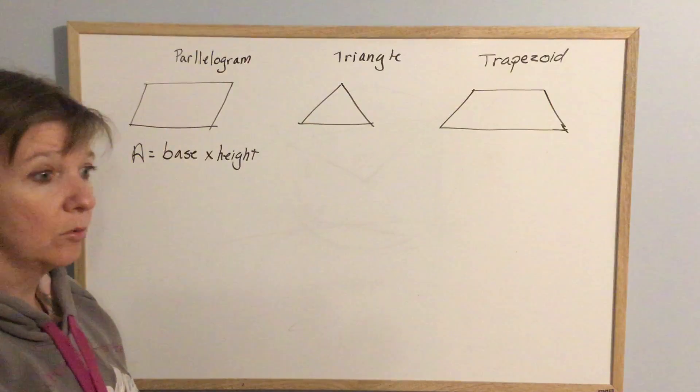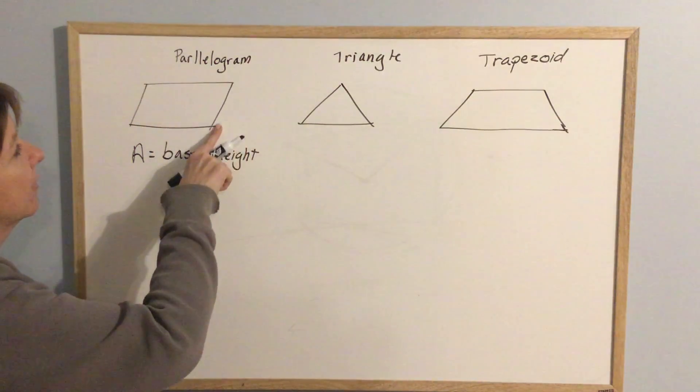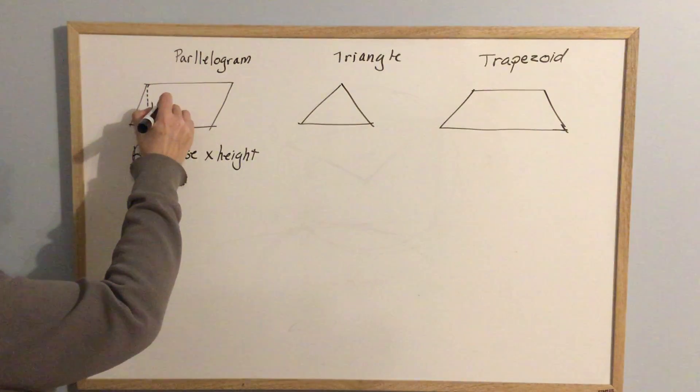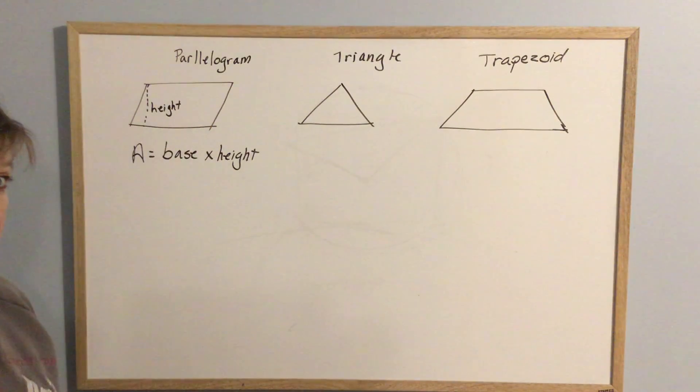The important thing to note is that when they talk about height, they're not talking about the slanted line. They're talking about height straight up and down. If I draw a line straight from the top to the bottom, not the slanted side.